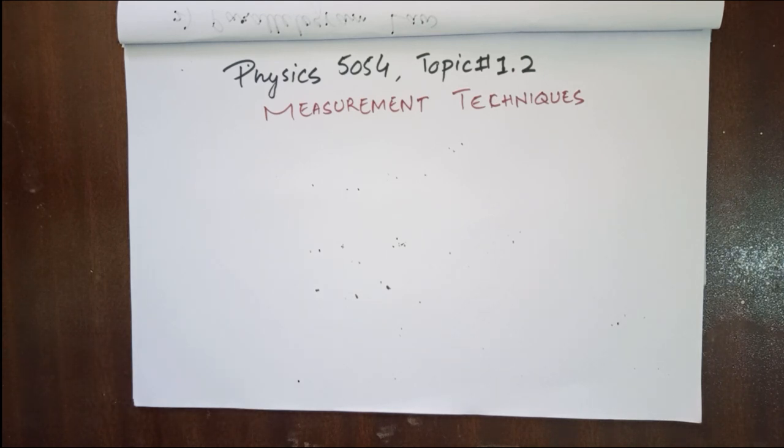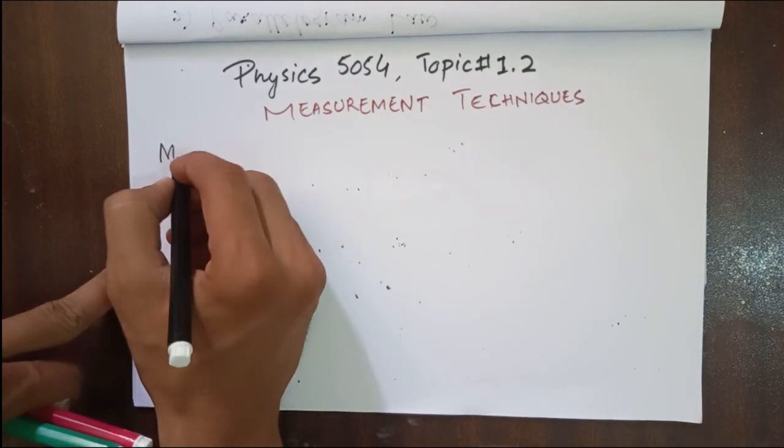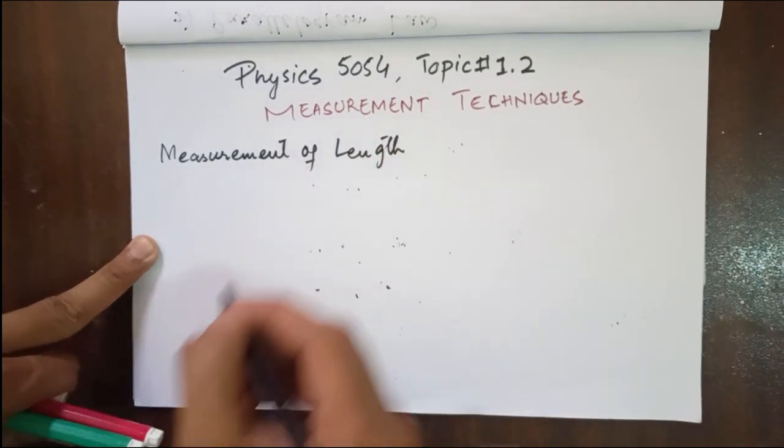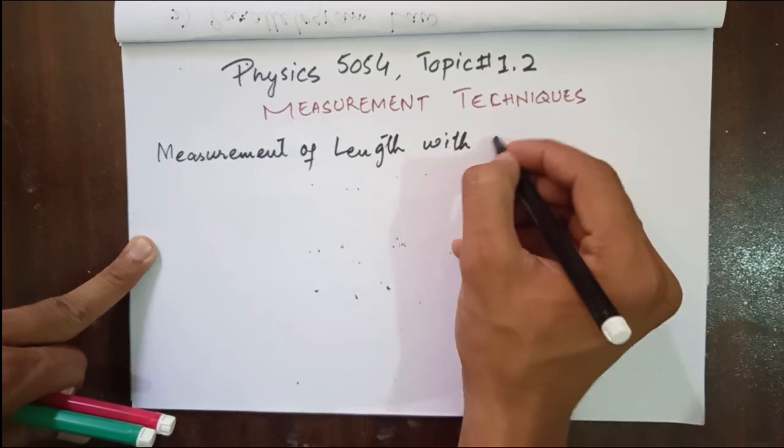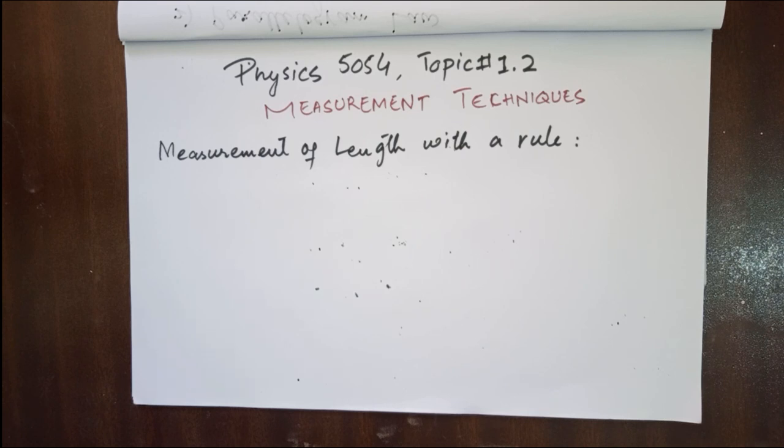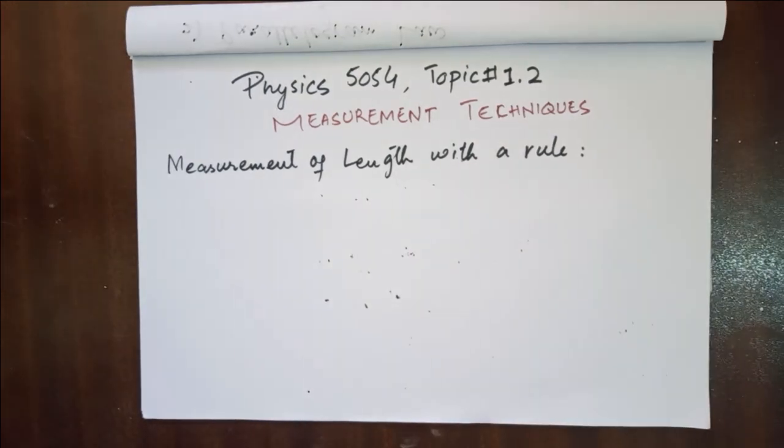The first topic that is included in our syllabus is measuring length and the technique that we are going to study is the measurement of length with a rule. We usually use a rule in classrooms to draw margins or in geometry to take some measurements. We also use the meter rule in physics laboratory. While taking measurements from a rule or measuring the length of a wire, these precautions have to be taken.